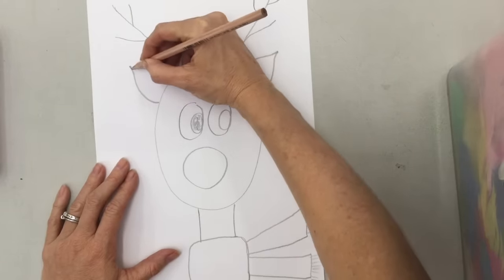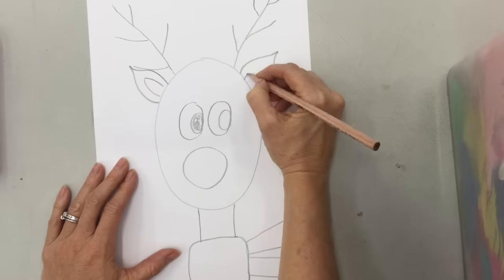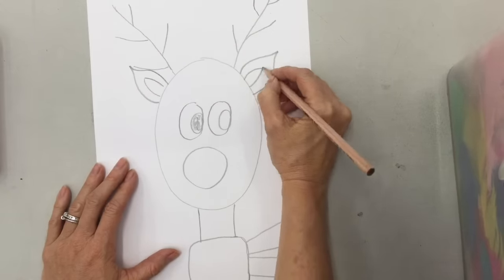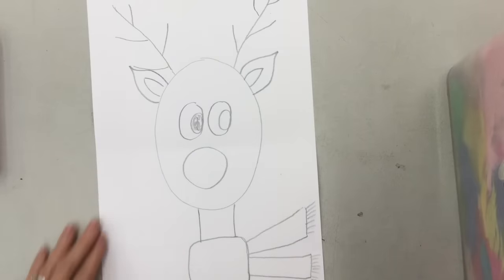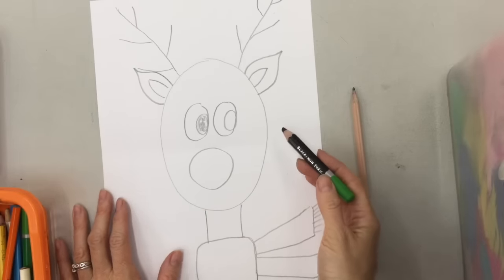Now we need ears, so his ears, kind of a shape like that, kind of turned up in the middle there. And then you can make some little bits inside. And that's how to draw a reindeer.